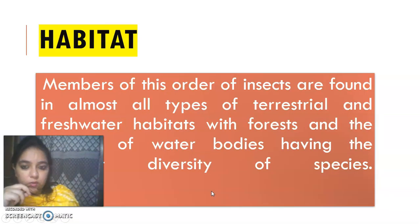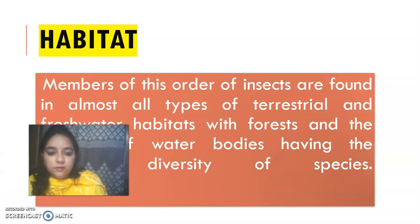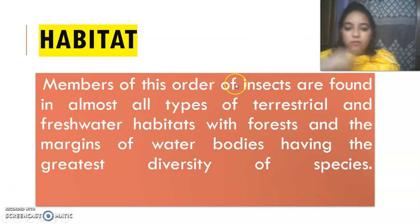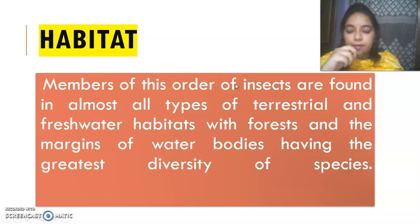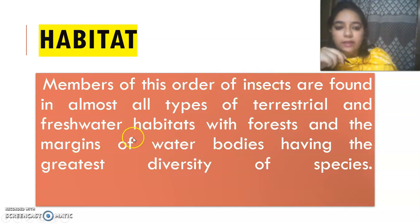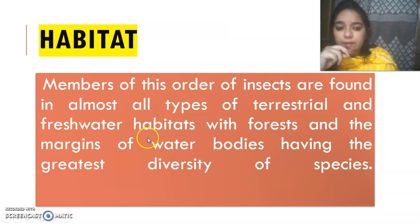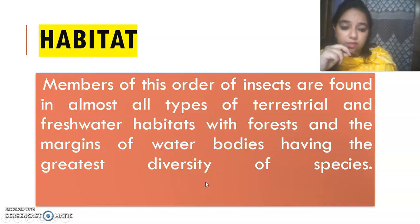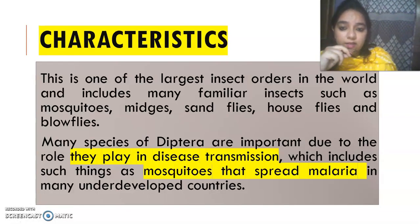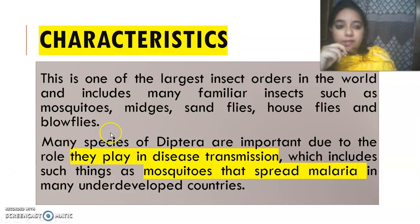This is a figure of a mosquito. What is the habitat? Members of this order, whether mosquito, fly, or any kind of insect found in this order, they are found in almost all types of terrestrial and freshwater habitats. They are found in forests or along the margins of water bodies, having the greatest diversity of species. They need water somewhere in their life cycle to maintain it.